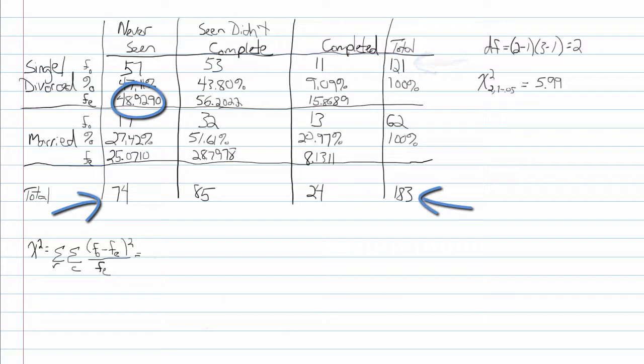Once you have the expected cell frequencies, it is relatively easy to compute the Chi-Square test.